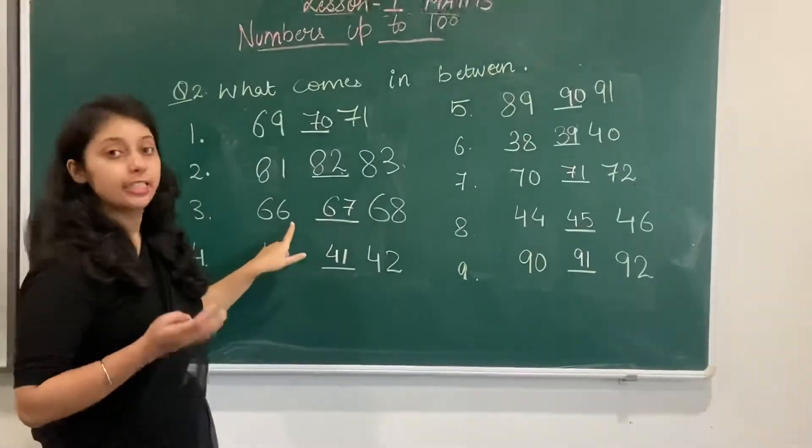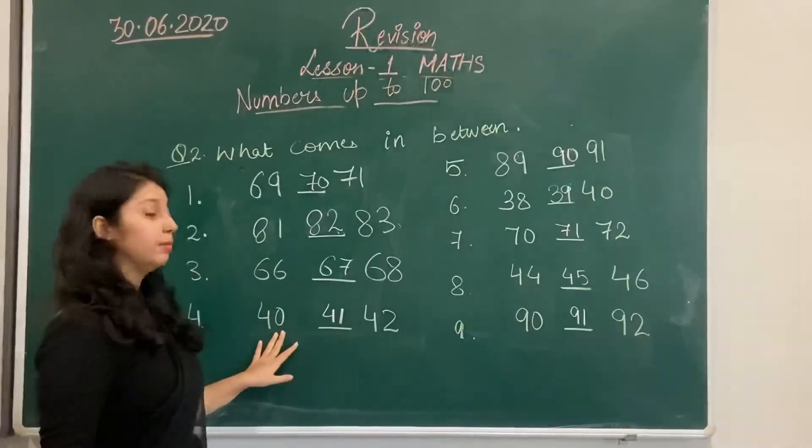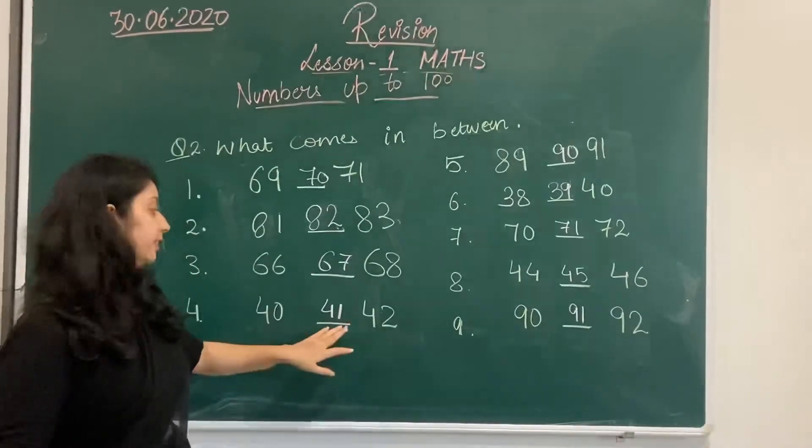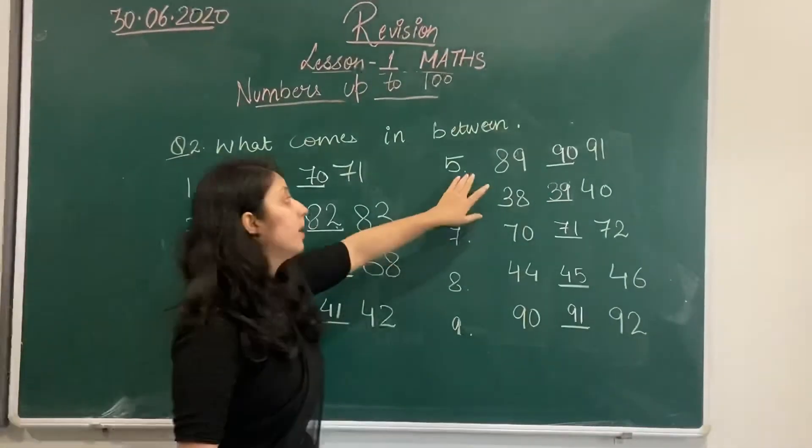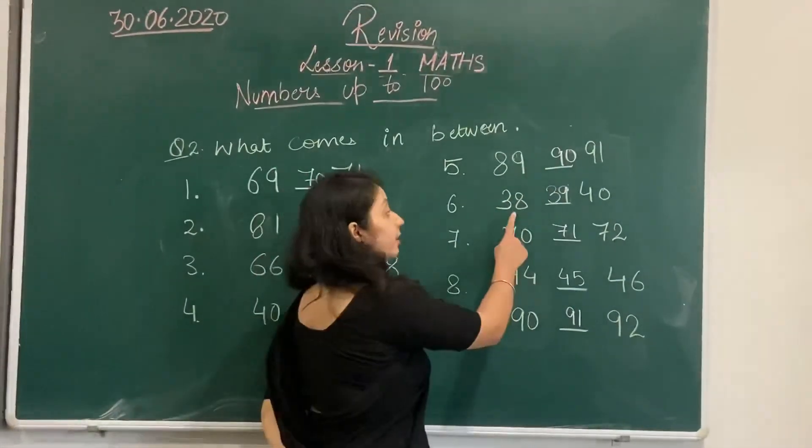Third question is 66, 68. Answer is 67. Fourth question is what comes in between 40 and 42. That is 41. Fifth question is what comes in between 89 and 91? 90. Then 38, 39, 40.